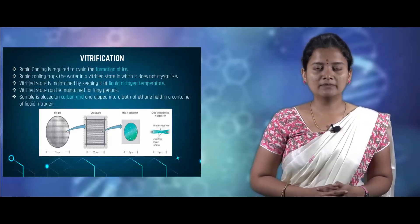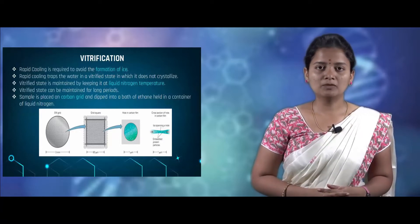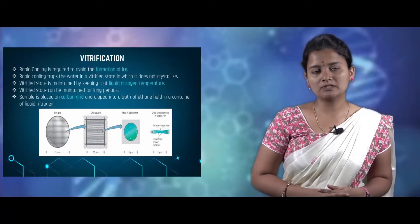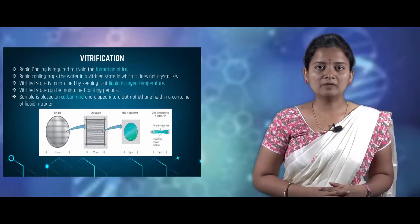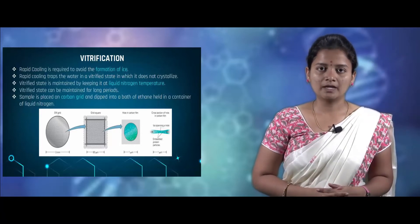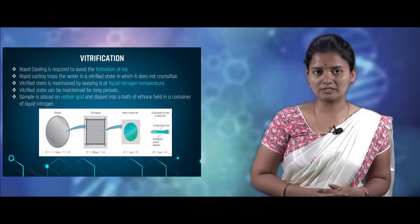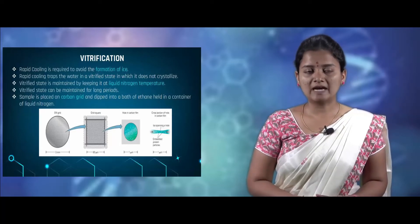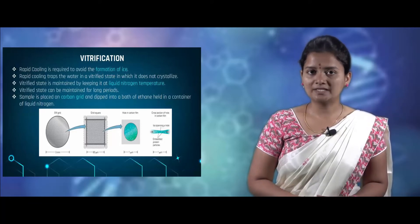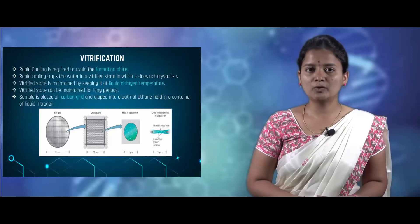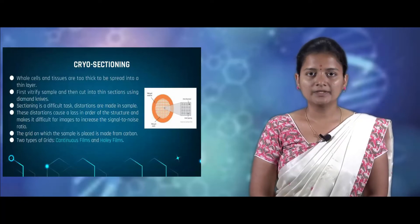Vitrification is a very important process in cryo electron microscopy. Rapid cooling is done in order to avoid the formation of ice crystals. Rapid cooling traps water molecules so that crystallization does not occur. The rapid cooling is usually maintained at liquid nitrogen temperature, and the samples can be maintained for a longer period. In vitrification, the sample is placed on a carbon grid and dipped in an ethane solution maintained in a liquid nitrogen container.